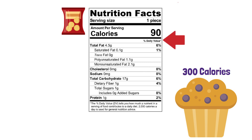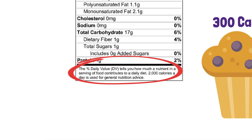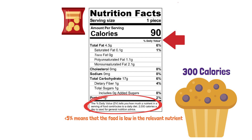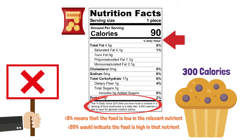Next you'll see a percentage daily value, with percentages listed parallel to total fat, saturated fat, cholesterol etc. As noted in the disclaimer at the bottom of the nutrition label, this states how much a nutrient in a serving of food contributes to a daily diet of 2000 calories. A good rule of thumb is that 5% or less means the food is low in that nutrient, whereas 20% or higher indicates it is high in that nutrient. We will not be discussing micronutrients such as vitamins and minerals in this video, as we will dedicate a separate video specifically for them.